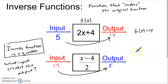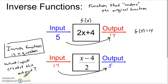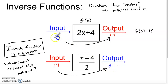So keeping those two things in mind: an inverse function undoes the original function, and essentially it's asking the question — what input created this output? Here we had an output of 14 from the original function. If we put that into the inverse function, it tells us what the original input was. If you put a 5 into the original, you get out 14. If I have a 14, what did I have to put in? It must have been a 5.